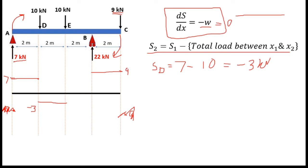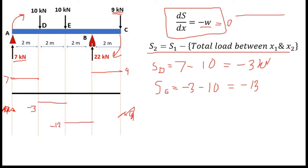Next, the EB part. I will apply this equation for point E: SE equals previous shear force value, which is minus 3, minus the total load at E. At E there is a point load of 10 kN. So SE = minus 3 minus 10 = minus 13 kN. I can mark it as minus 13. Now I have completely drawn the shear force diagram for this beam.